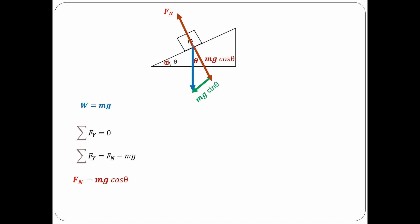Now it turns out that there is a force that accelerates the block down the incline, and we will call it Fg. You will notice that Fg is parallel to Mg sin theta, so it turns out that Fg is equal to the component of the weight force, Mg sin theta. The second equation to be used is Fg equals Mg sin theta.